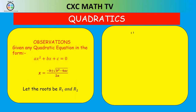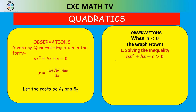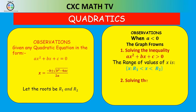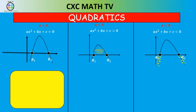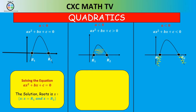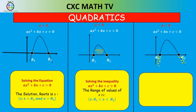When the graph frowns (a < 0) and we solve greater than 0, the range of values is r1 < x < r2 — the portion of the graph above y = 0. When solving less than 0, the range of values is x < r1 or x > r2, which is the region below the line y = 0.